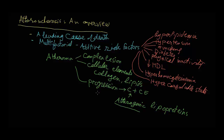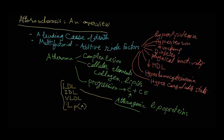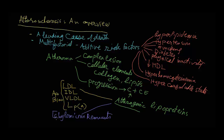Cholesterol and cholesterol esters come from atherogenic lipoproteins. There are a host of different lipoproteins that can function as atherogenic lipoproteins and have the potential to participate in the process of atherosclerosis. These are LDL, IDL, VLDL, and an LDL-like particle which we call Lp(a). As you notice, all these species are associated with ApoB100 as their marker.